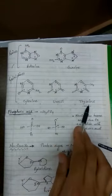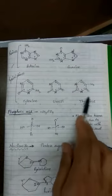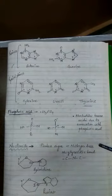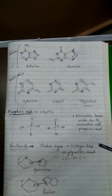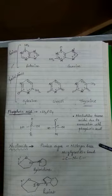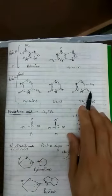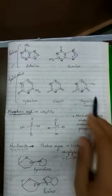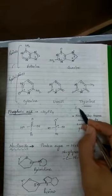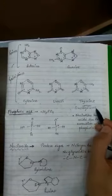Uracil underwent modification and got a methyl group attached at its fifth position, which is why it is now called five-methyl uracil, also known as thymine. Thymine is found in DNA. The second reason why DNA is non-reactive or stable is the presence of thymine, which is a modified form of uracil, also called five-methyl uracil.